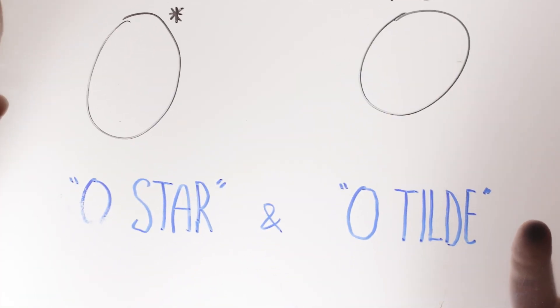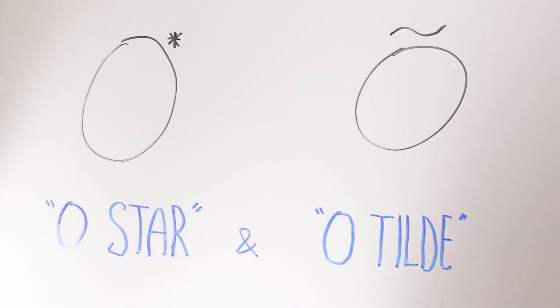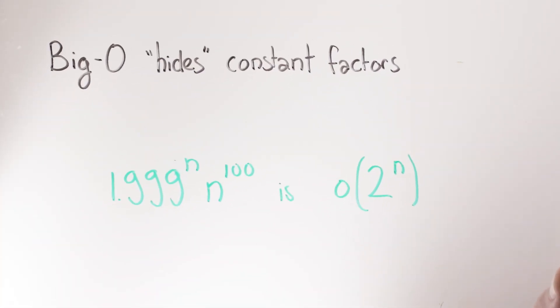Now, you know about big O notation, right? You use it to hide constant factors and to focus on the asymptotic behavior over anything that happens on finite inputs.